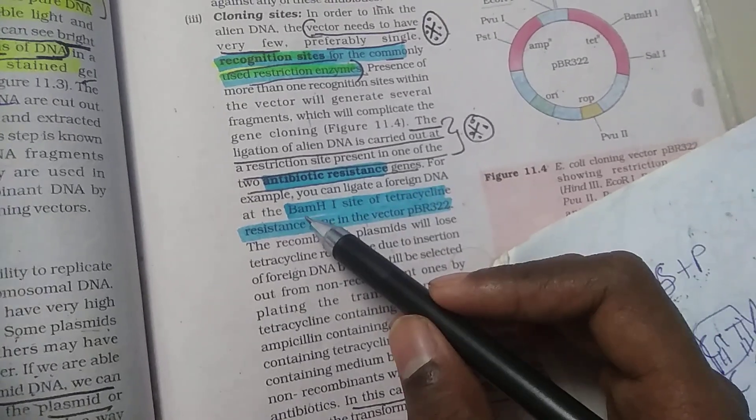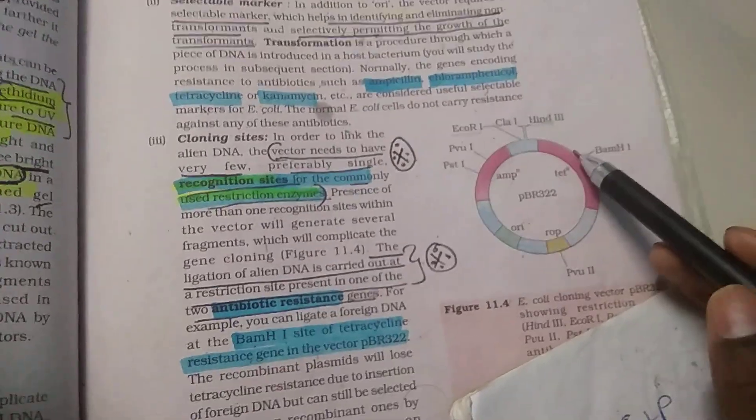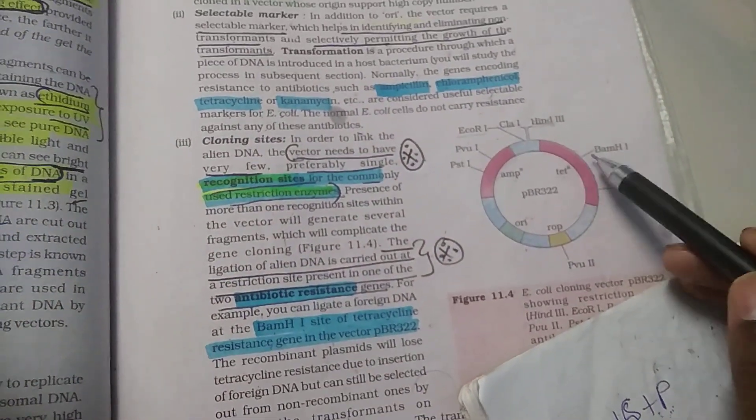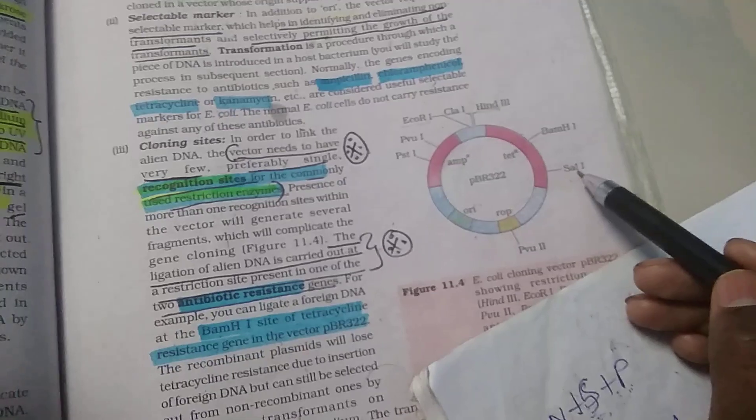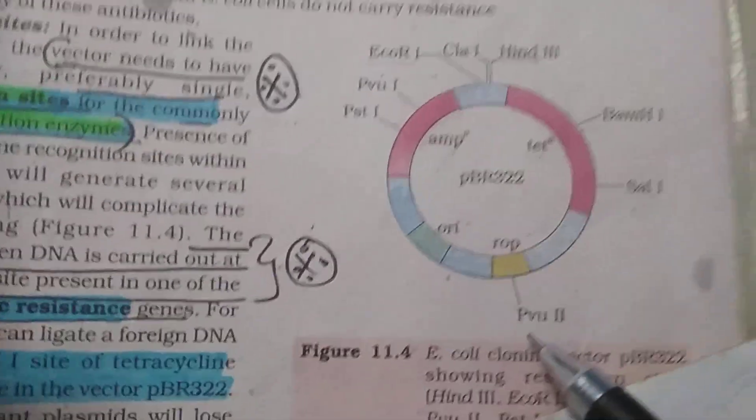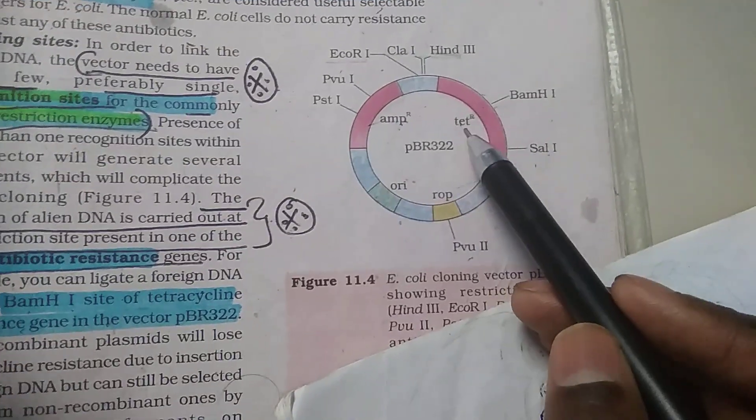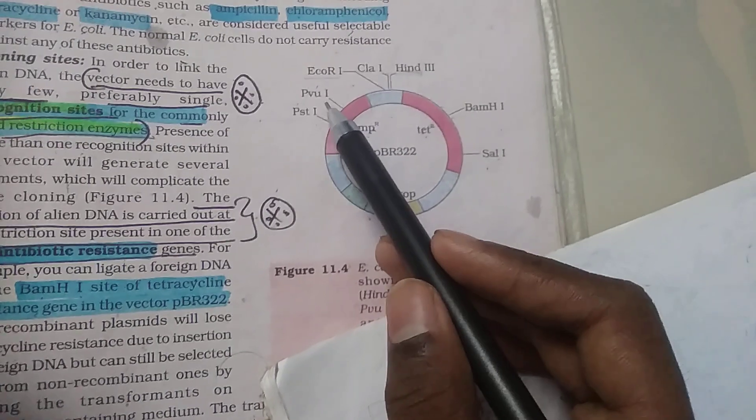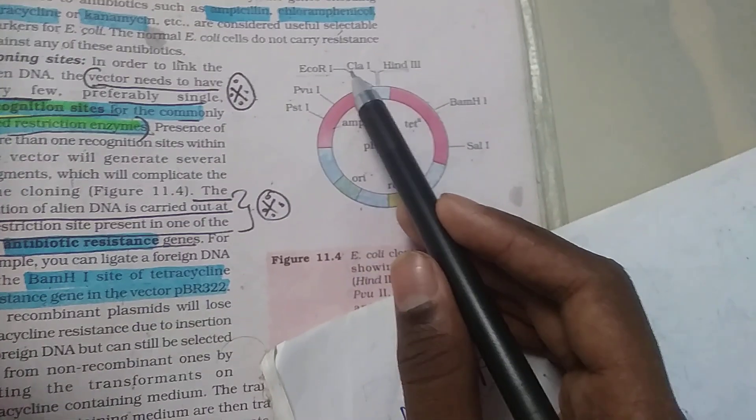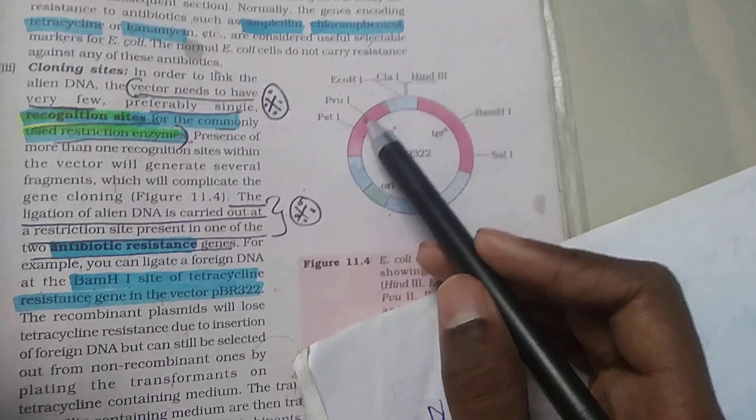For foreign DNA, BamHI site in the tetracycline vector pBR322 can be used. Here is BamHI. We will need to use the ampicillin gene. The sites include: PstI, PvuI, PvuII, EcoRI, ClaI, HindIII, ClaI, EcoRI, PvuI, and PstI.